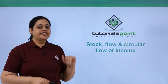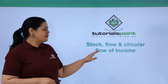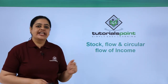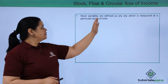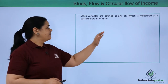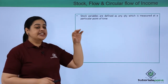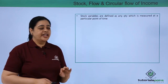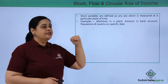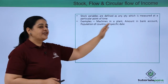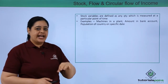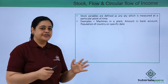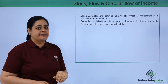We understood what are the different types of goods in economy. Let's now understand the stock flow and circular flow of income. When it comes to stock variables, they are defined as any quantity which is measured at a particular point of time. Examples would be machine in a plant, the amount in the bank account as of now, population of a country as of today. That would be a stock variable.